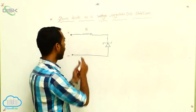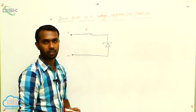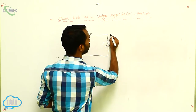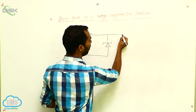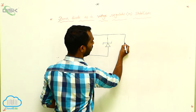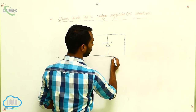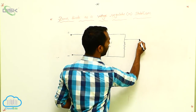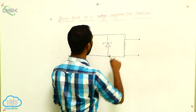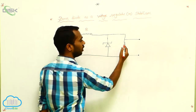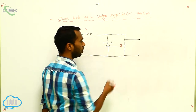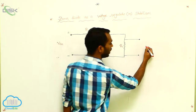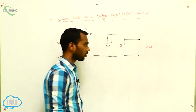We have to take the output here. I am applying input there. Output is always taken across the load resistor. Here I am connecting a load resistor R_L to take the output. We give voltage input and take voltage output — V out.